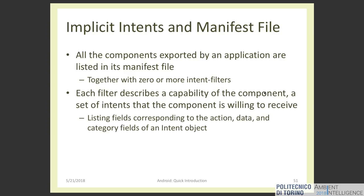All components are declared in the manifest file, and for each component we can specify one or more intent filters — meaning 'I am a component and I will react to these intents.' For example, if we have two different components from two different applications associated with the same intent filter, when we generate an implicit intent and send it to Android, Android will ask us which application we want to use, and we can select which application to use for this operation.